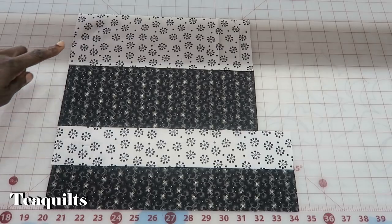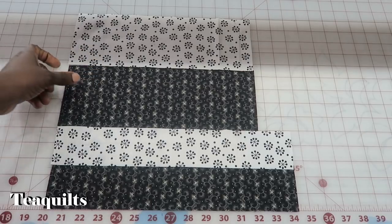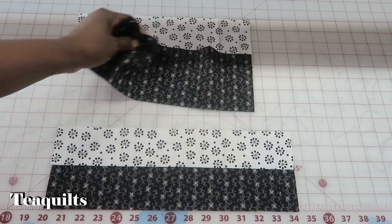So from each print you want one piece that's four and a half by twelve and a half. These need to be cut the exact measurement.